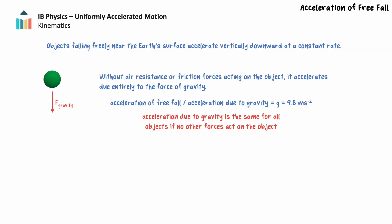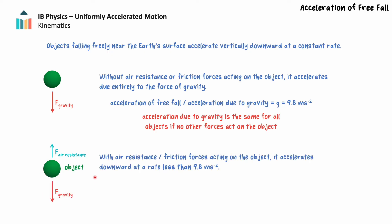Now let's shift our focus to a specific type of uniform acceleration: free fall. When an object falls freely near the Earth's surface, it accelerates downward at a constant rate due to gravity. All objects accelerate at the same constant rate provided they do not experience air resistance or another friction force. If gravity is the only force acting, the object accelerates downward at 9.8 m/s². If other forces like air resistance act on the object, it will accelerate at a rate slower than 9.8 m/s². Sometimes the variable g is used instead of a. For multiple choice questions, it's often easiest to round the acceleration of free fall to 10 m/s².